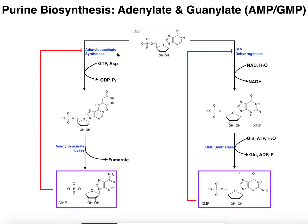Let's start with the pathway on the left to get AMP. IMP can react with an enzyme called adenylosuccinate synthetase, and that's going to give this molecule called adenylosuccinate. This enzyme is going to use the activating power of GTP. We'll talk about why that is in the next video. Here we essentially have aspartate attached, and the molecule is called adenylosuccinate, with a net hydrolysis of GTP to GDP and inorganic phosphate.